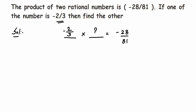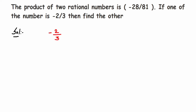Let me frame the question once again. So here, minus 2 by 3, which is one of the numbers, multiplied by the other number — which we have to find out. Let me take the other number to be a variable 'a'. So this is equal to minus 28 by 81. Now I have to find the value of 'a'. If we multiply, minus 2 into a will become minus 2a upon 3, which equals minus 28 by 81.